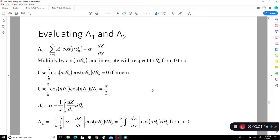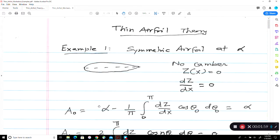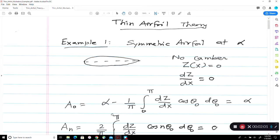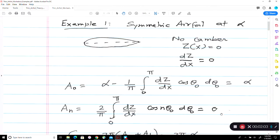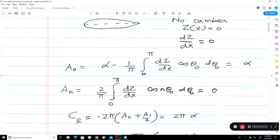So if dz dx is zero, a naught is just alpha, an is zero. Therefore a naught is simply alpha, an is zero. Then what happens to CL? 2 pi times a naught plus a1 over 2 becomes 2 pi alpha. This becomes a very, very simple straight line curve fit passing through the origin. So when you have a zero angle of attack, a symmetric aerofoil produces zero lift. The lift curve slope is 2 pi.